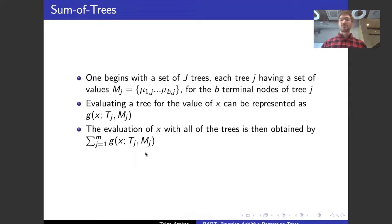Just going over the sum of trees model very quickly, we're going to have j trees with each tree j having a set of values m sub j, and these are just the mu terminal node values of that tree. To evaluate each tree, we're just going to represent it as g of x given t sub j, m sub j, and this is going to be the value of the mu ij value that results from evaluating x in tree j with the values that it has at its nodes, and the evaluation of x with all the trees is just going to be the sum of the g of x in all of the trees.